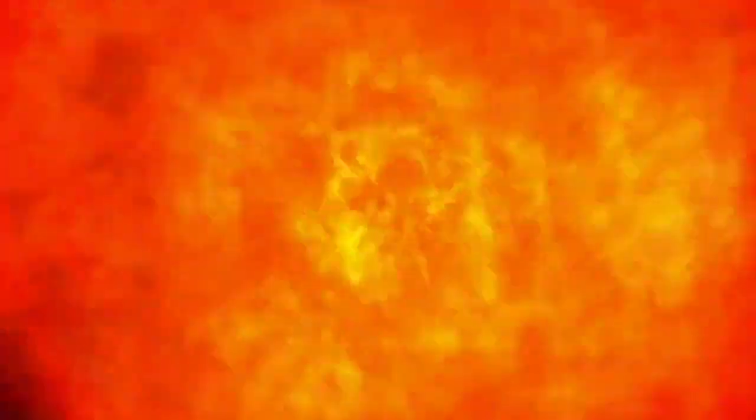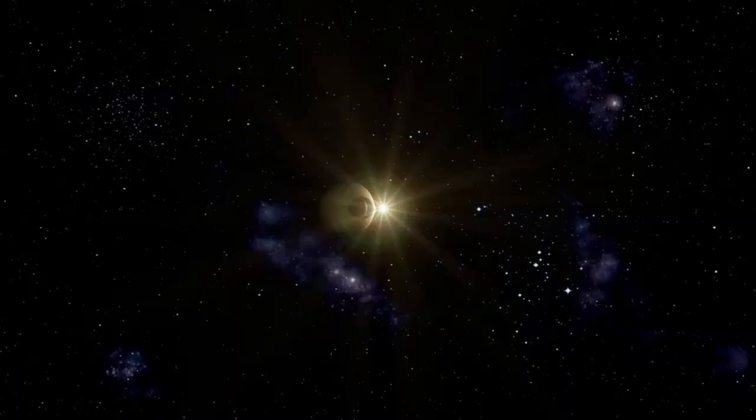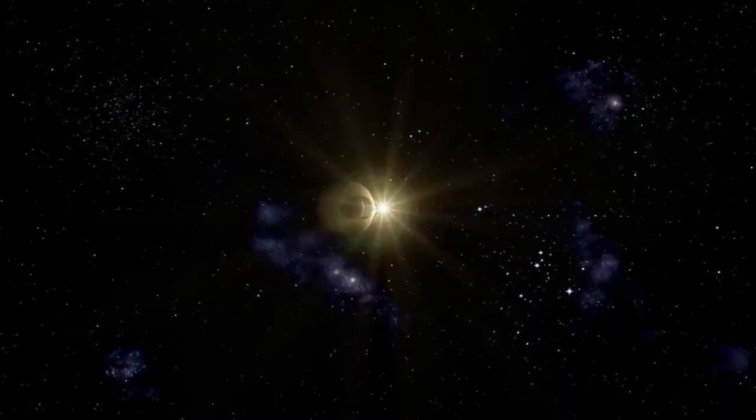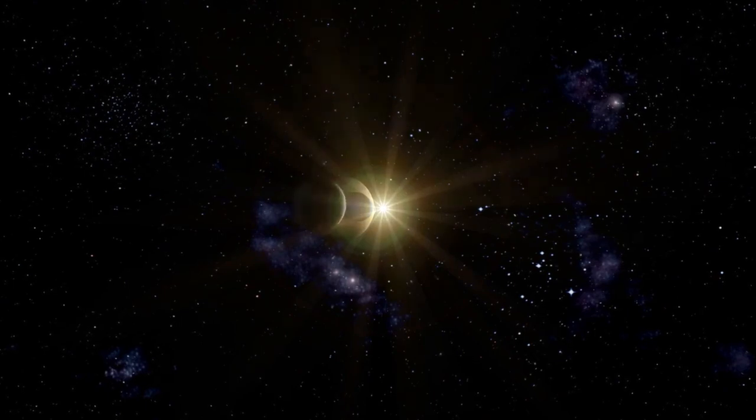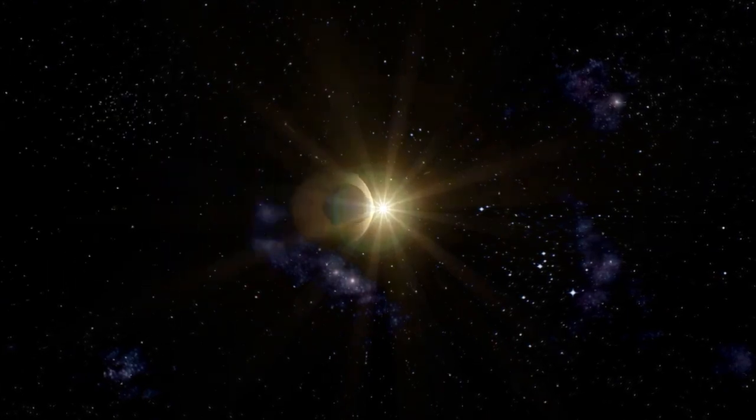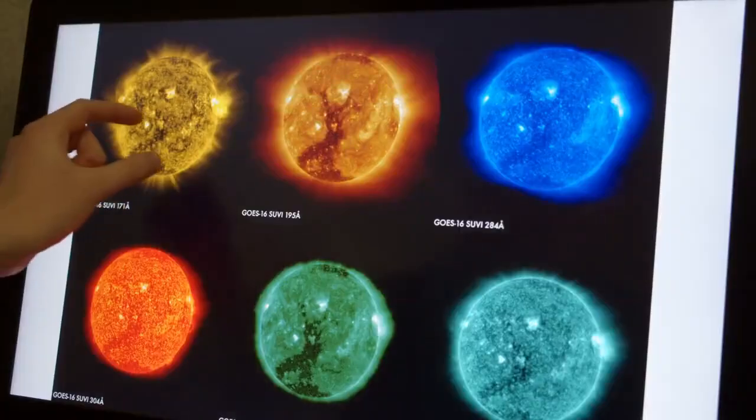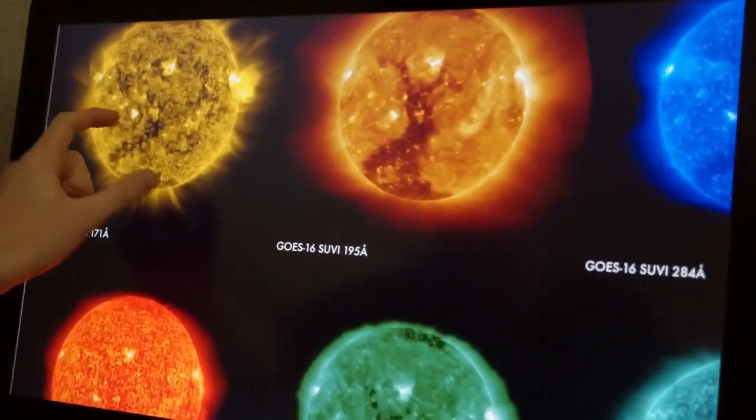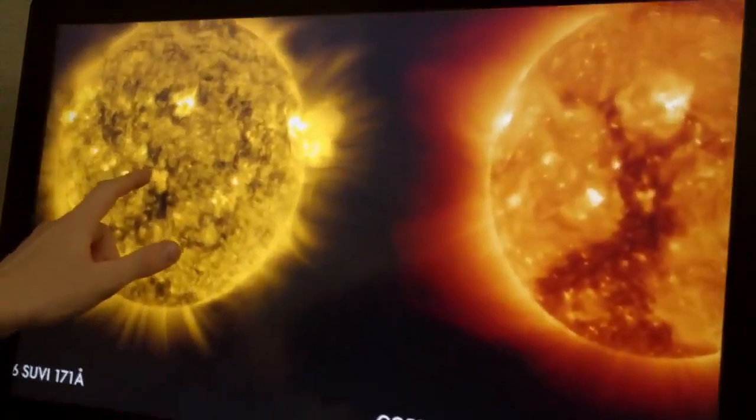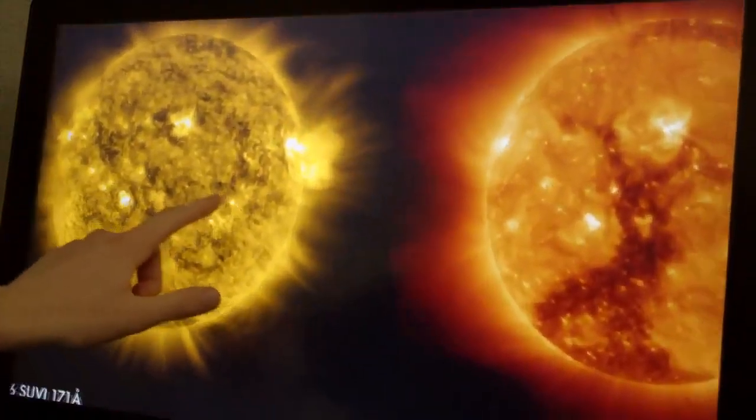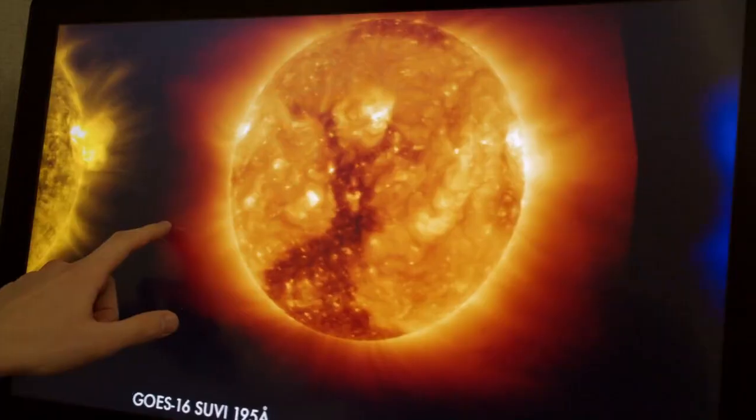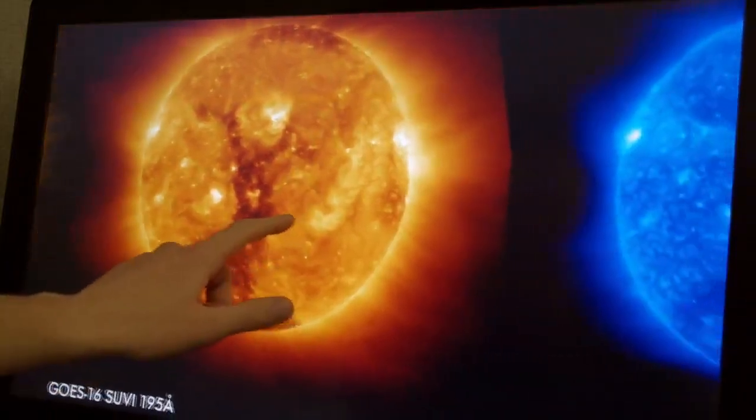In the case of Betelgeuse, a red supergiant nearing the end of its life cycle, this balance has become increasingly unstable. As the star depletes its core hydrogen fuel, the nuclear fusion processes that sustain it undergo significant changes. When hydrogen fusion slows in the core, radiation pressure decreases, causing the gravitational pull to momentarily gain the upper hand. This results in the contraction of the star's outer layers.